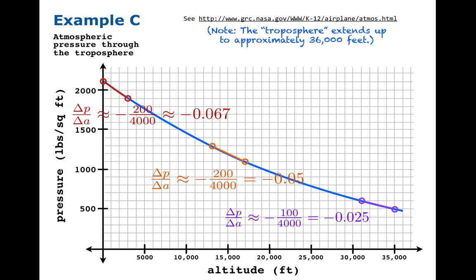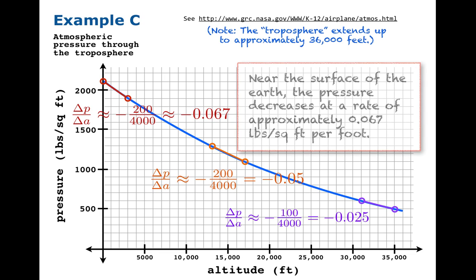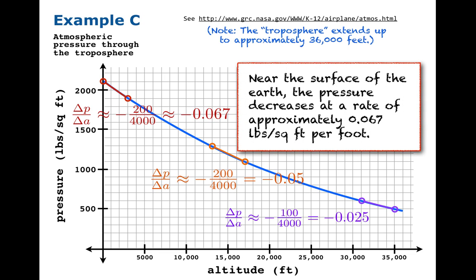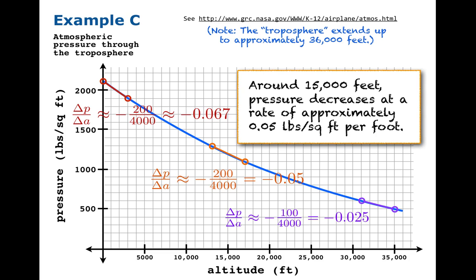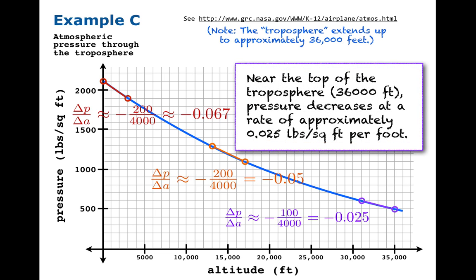Why bother with this? This enables us to say some things that are relatively intelligent and relevant to pressure and altitude. For example, the first calculation could be translated into the following statement. Near the surface of the earth, the pressure decreases at a rate of approximately 0.067 pounds per square foot per foot. Similarly, the second calculation could allow us to say reasonably that around 15,000 feet, pressure decreases at a rate of approximately 0.05 pounds per square foot per foot. And finally, near the top of the troposphere, pressure decreases at a rate of approximately 0.025 pounds per square foot per foot.